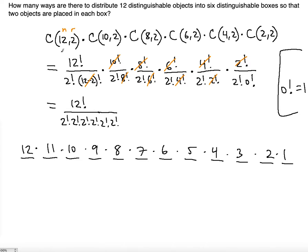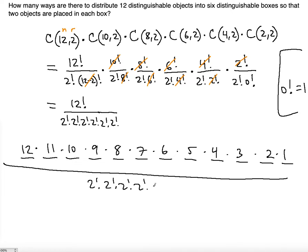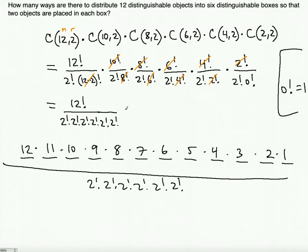So even though we started with different factorials on top, the result simplifies to 12! divided by (2!)^6 — six two-factorials, one for each of the six distinguishable boxes, ensuring no ordering of the two objects inside each box. Let's compute: 12! equals 479,001,600, divided by 2! raised to the sixth power.